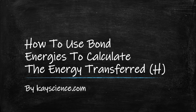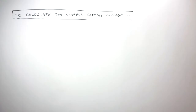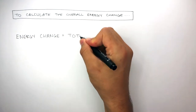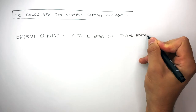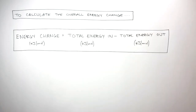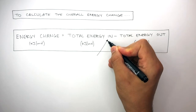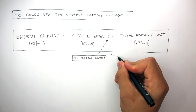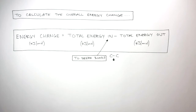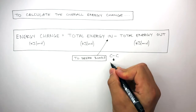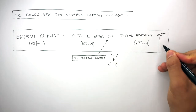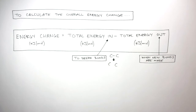How to use bond energies to calculate the energy transferred — higher content by kscience.com. To calculate the overall energy change, we use: energy change equals total energy in take away total energy out, and the unit is kilojoules per mole. The total energy in is used to break bonds — for example, energy is always taken in to break a covalent bond between two carbon atoms. Total energy out results from when new bonds are made — for example, carbon atoms combining to form a new chemical bond releases energy.